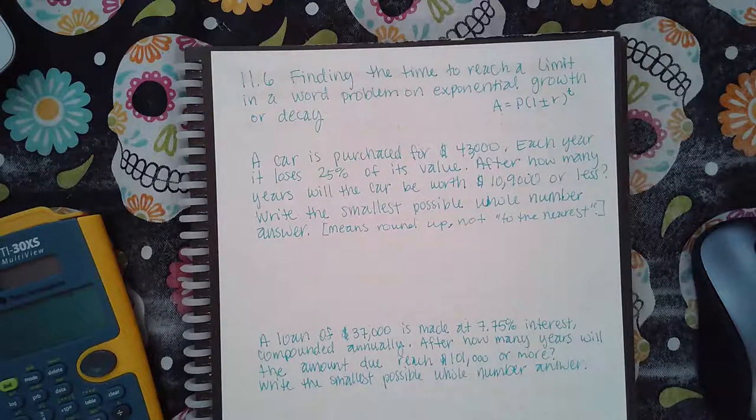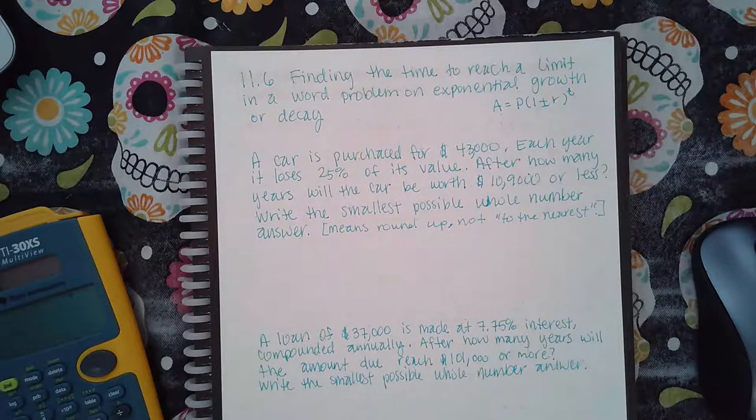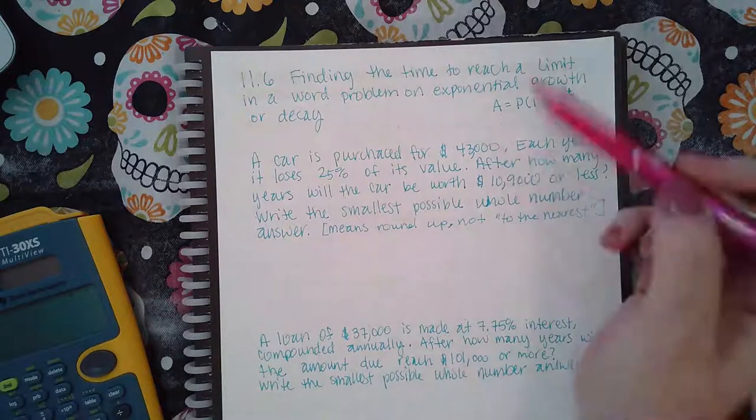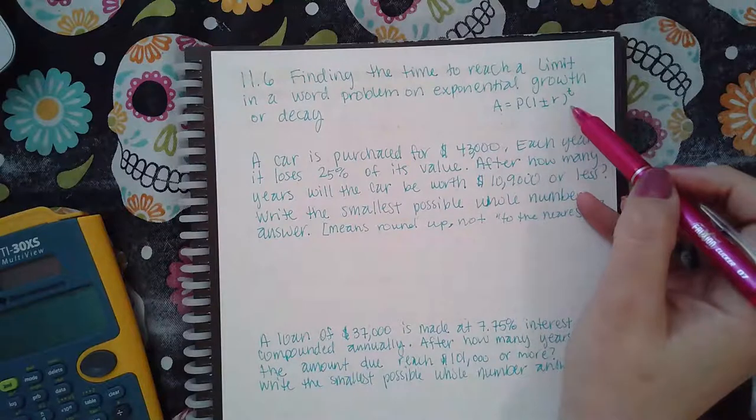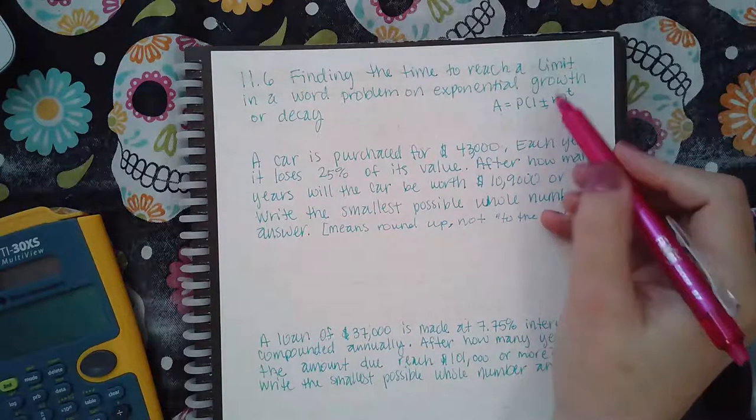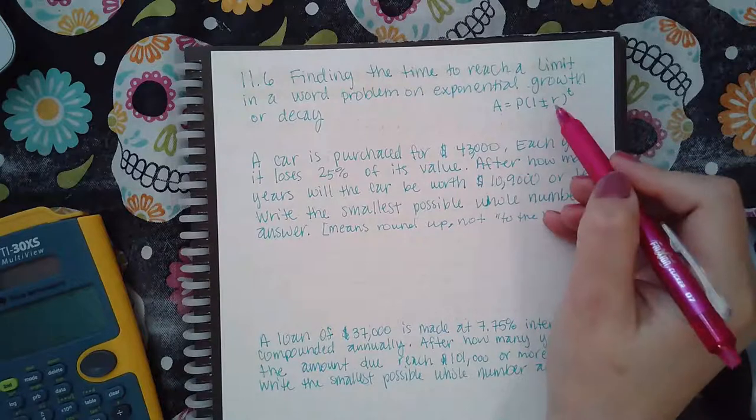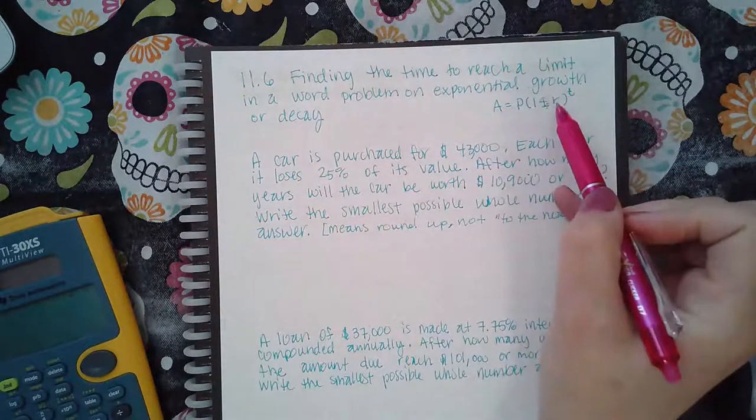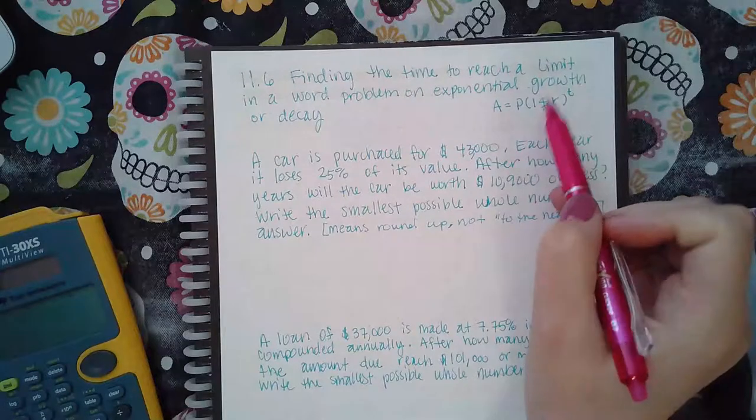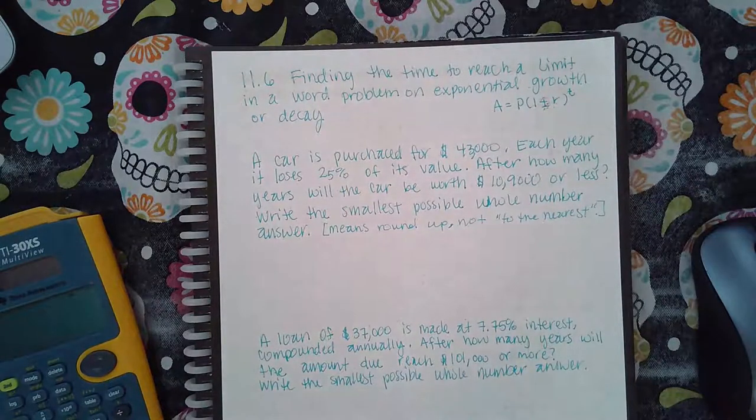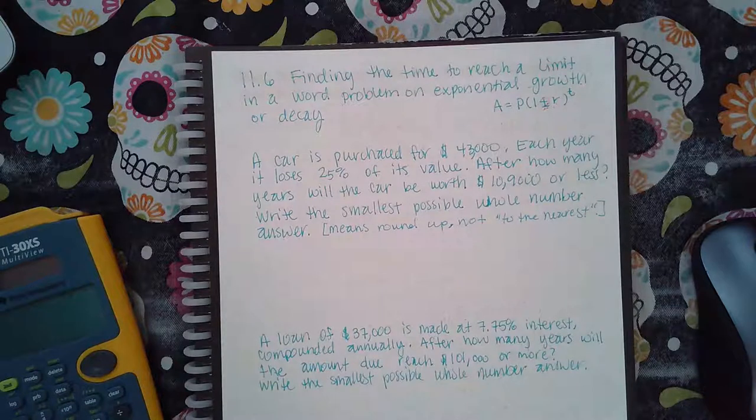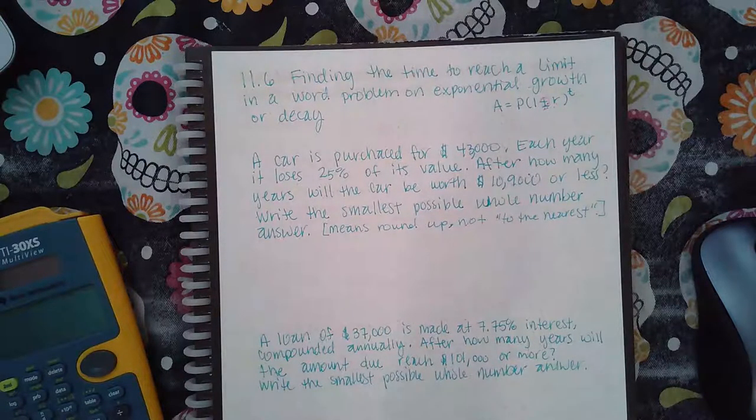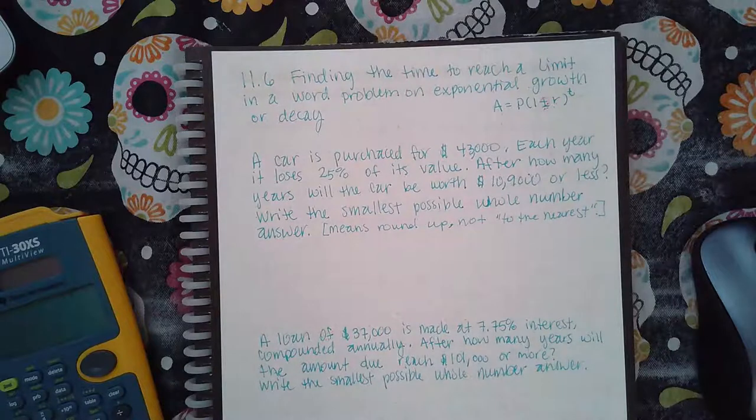So here it says, finding the time to reach a limit in a word problem, an exponential growth or decay. This is the formula for exponential growth or decay. It says plus or minus, because if it's a growth problem, then your rate will be positive. If it's a decay problem, then your rate would be negative. So you really have to pay attention to the situation and read the paragraph thoroughly to decide whether this is a situation where it's growing or whether it's decaying or going away.